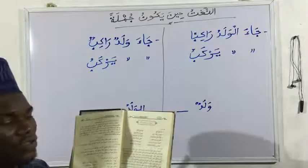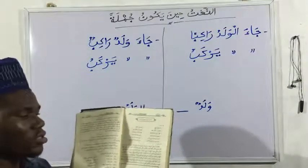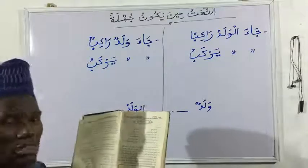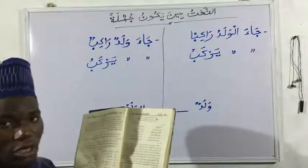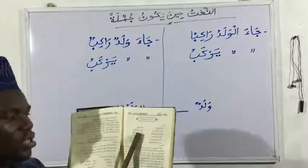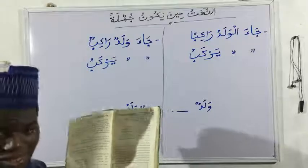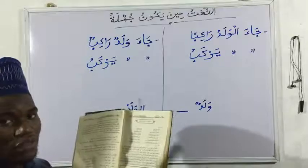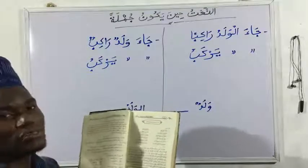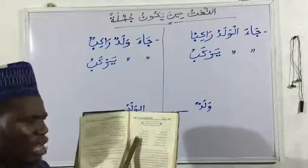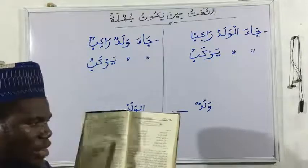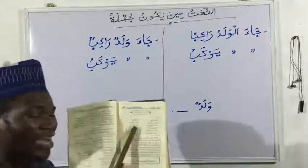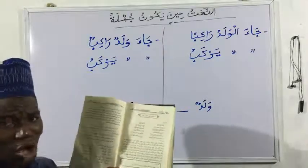Number three: unthuru fi birkatin taghraquha — I am looking at a drowning canoe. We can say: I am looking at a drowning or sinking vessel. The sifa — what is qualifying — is in nakira state. So again, it is sifa because the noun being described is indefinite.